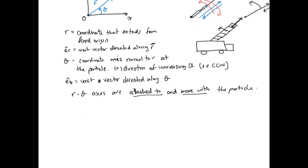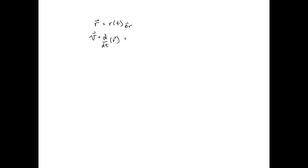Now we'll go through velocity and acceleration in polar coordinates. The position of a particle is r, a function of time in the radial direction. Velocity is d/dt of r, and we use the product rule, giving us r-dot times er plus r times theta-dot times eθ.